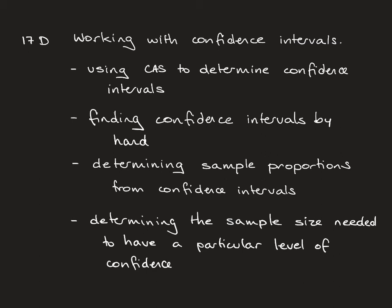In this video we're going to be working with confidence intervals. We're going to be using our CAS — the TI-Inspire is the one I'll show you how to use — to determine confidence intervals. We'll be finding confidence intervals by hand, as you need to be able to do that as well. We'll be working out sample proportions if they give us a confidence interval, how to find the sample proportion, and how to find the sample size needed for a particular level of confidence.